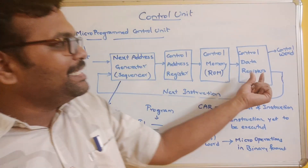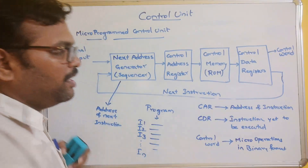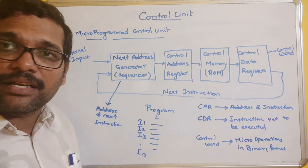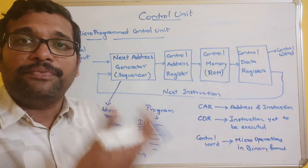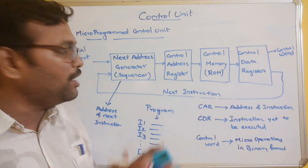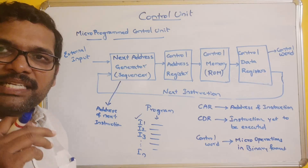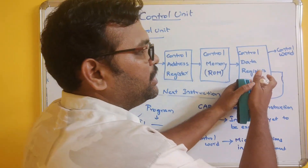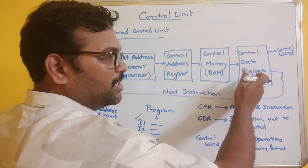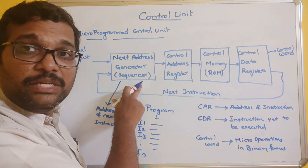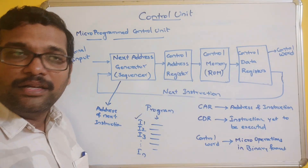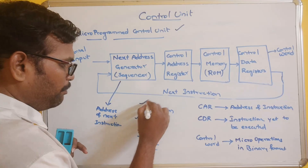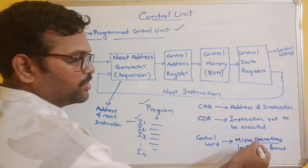Whenever an instruction is being executed, immediately the next instruction is fetched into the next address generator. That's why we call it a sequencer — it decides in sequence which instruction should be executed next, and that is loaded into the control address register by this sequencer. For example, when we are executing instruction 1, its address goes to the address register; the instruction is loaded into the data register, and then the sequencer fetches the next instruction address into the control address register. This logic is what we call the microprogrammed control unit — dealing with programs, instructions, and operations.